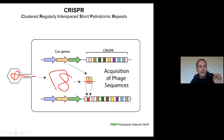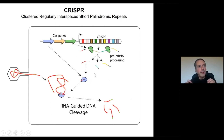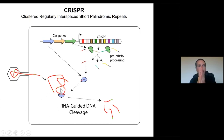Now the bacteria knows the virus because it has a little bit of its DNA. The next time the virus infects the bacteria, the bacteria will synthesize all these different tags. The tag that is homologous to the DNA of the virus will hybridize there. The bacteria will transcribe RNA from the DNA, and the RNA will hybridize to the DNA of the virus. The cool thing is that bacteria will also synthesize a protein that has the ability to bind to this RNA that is being produced.